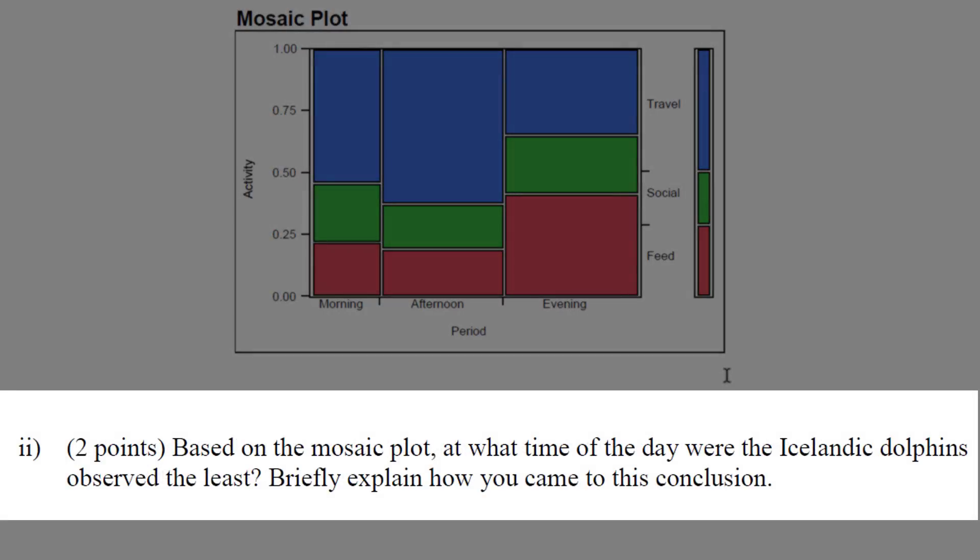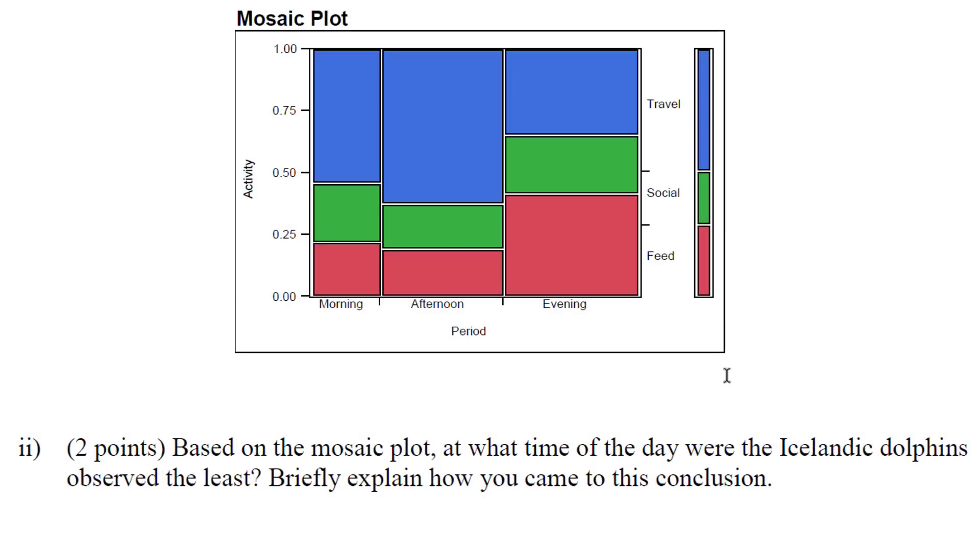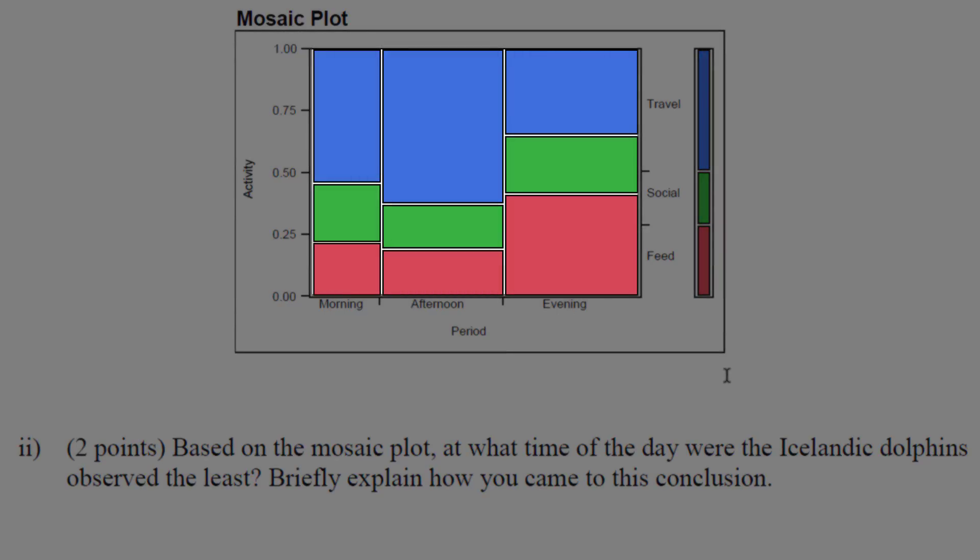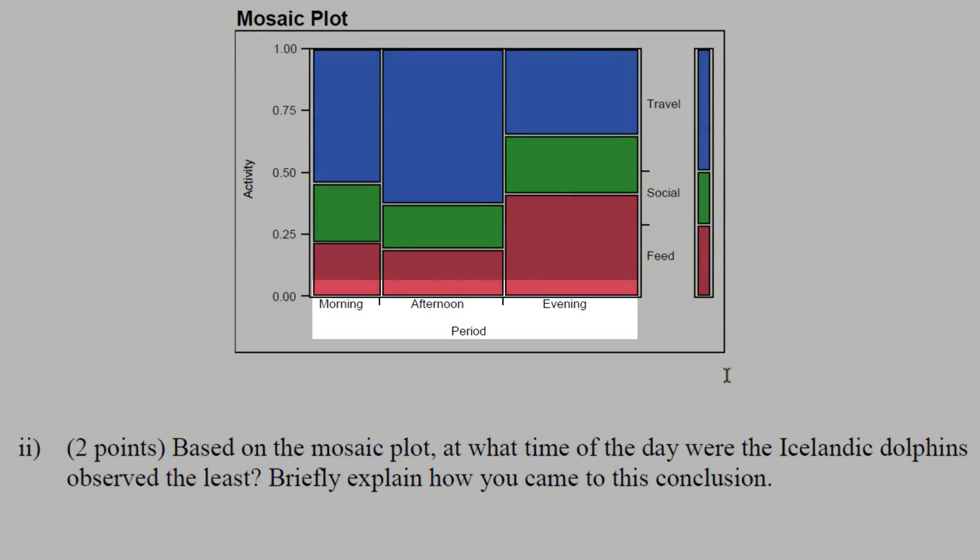Next, based on the mosaic plot, at what time of day were the Icelandic dolphins observed the least? Now mosaic plots are great because they give us both the bivariate and the univariate displays. The bivariate display would actually be the inside of it, which shows us things like morning-feed which is a very small area, versus afternoon-travel which is the largest area. You can also see the univariate displays if you simply look in the margins—these are the marginal displays for period and the marginal display for activity.